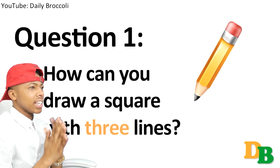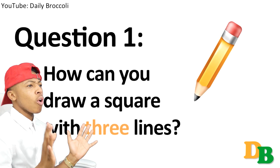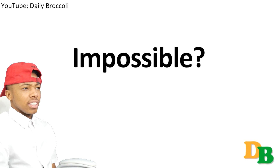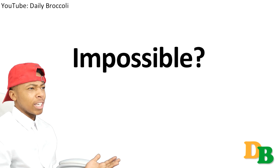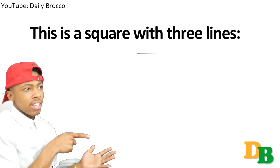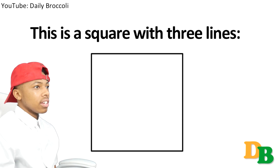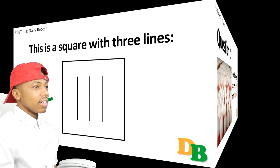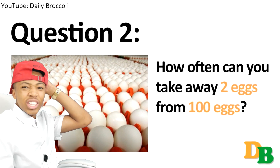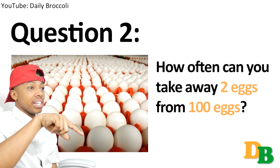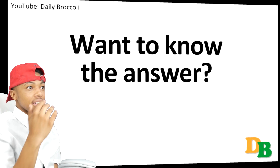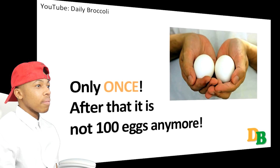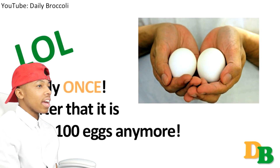Alright, here we go. Question one: how can you draw a square with three lines? That's what you're gonna tell your friend — it seems impossible, like how would you do it with just three lines? The answer is: you just draw a square and then you put three lines in it. I didn't quite get to see the full answer.